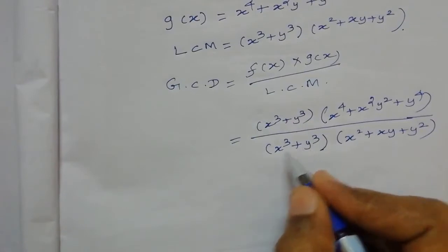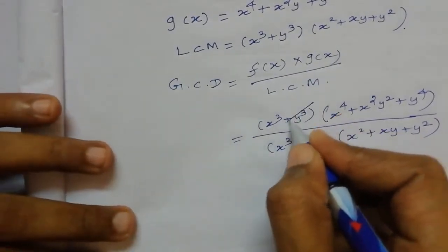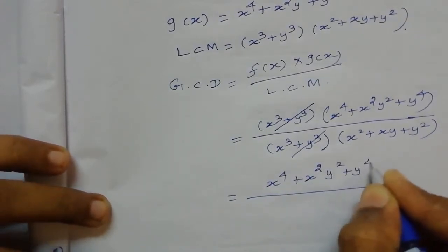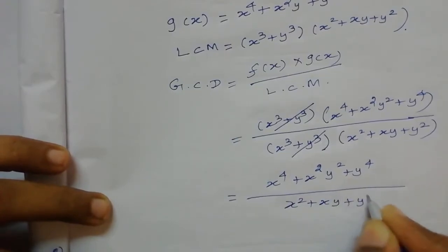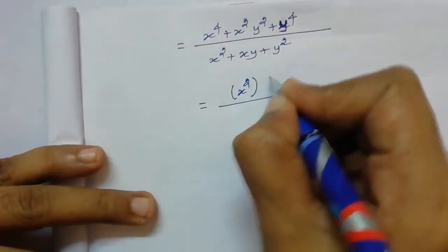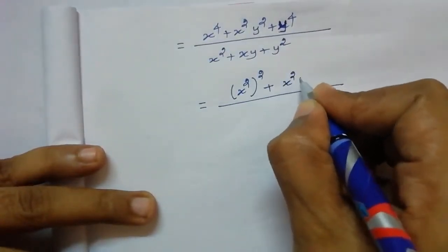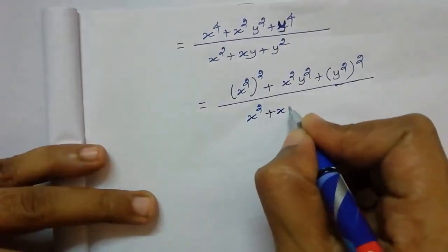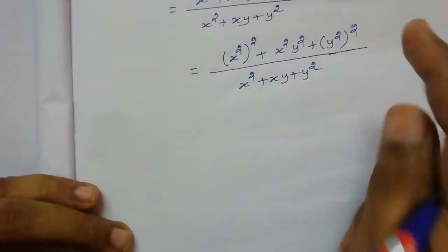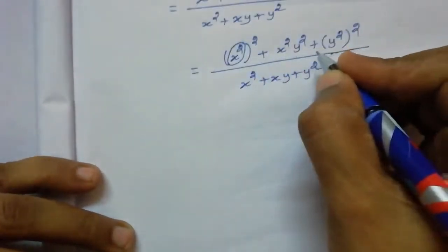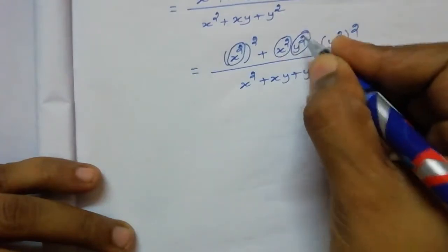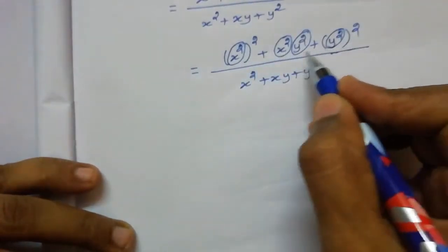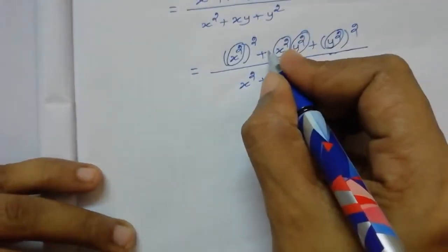Cancel the common factor (x³ + y³) from numerator and denominator. The remaining is (x⁴ + x²y² + y⁴) ÷ (x² + xy + y²). Rewrite the numerator: x⁴ = (x²)², y⁴ = (y²)², so it is (x²)² + x²y² + (y²)². This is of the form a² + ab + b² where a = x² and b = y², but the coefficient 2 is missing from the middle term.